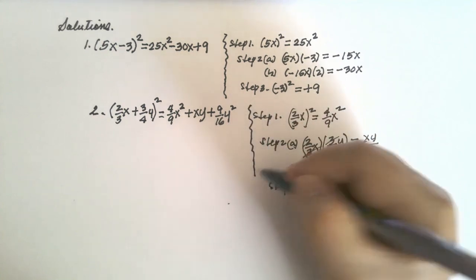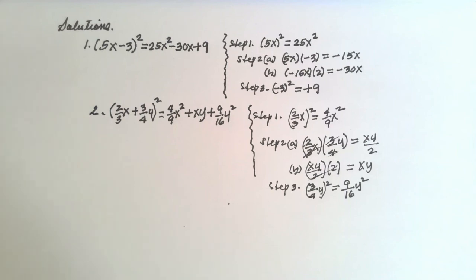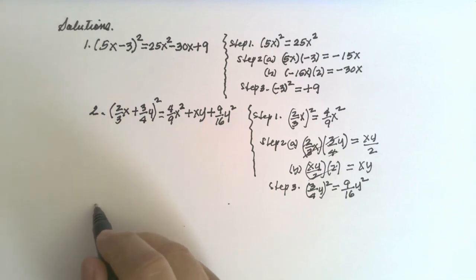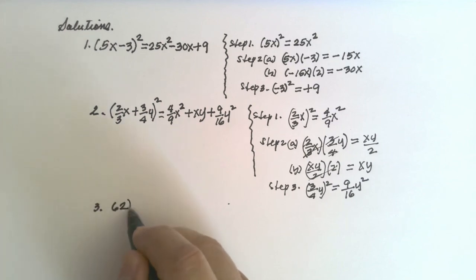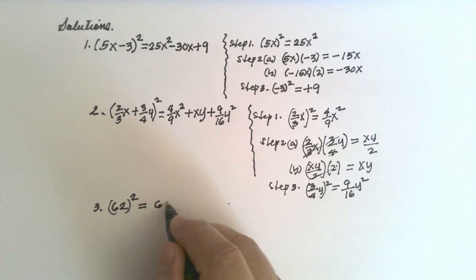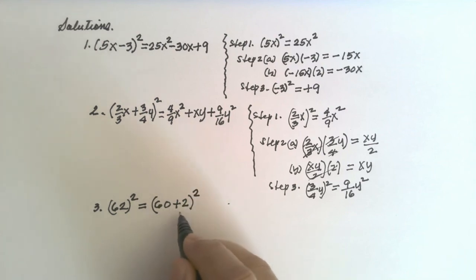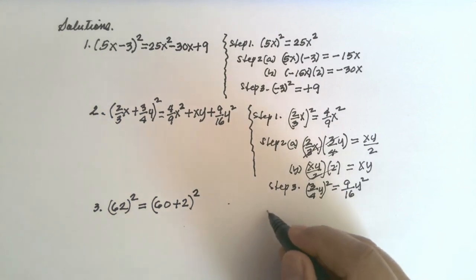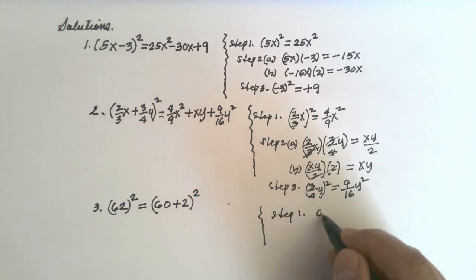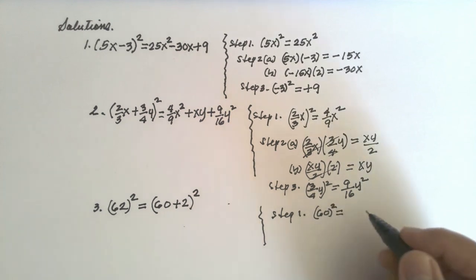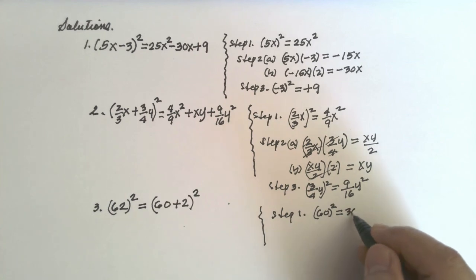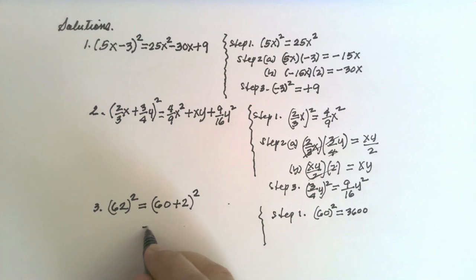Now we apply this to squaring integers. 62 squared can be written as (60 + 2) squared — this is now in the form of a binomial. Step number one: square the first term — 60 squared equals 60 times 60, which is 3,600.